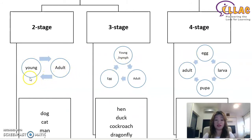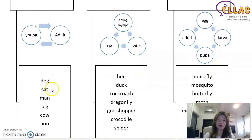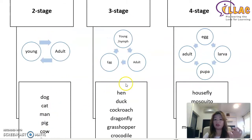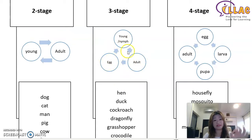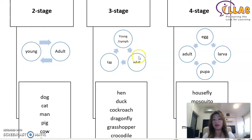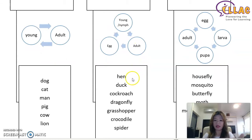Two-stage animals are born live — they are young and then become adults. Examples include dog, cat, human, pig, cow, and lion. The three-stage animal life cycle goes: egg, then the young (sometimes called the nymph), then they grow to become adults who lay eggs, and the cycle repeats. Examples include hen, duck, cockroach, dragonfly, grasshopper, crocodile, and spiders.